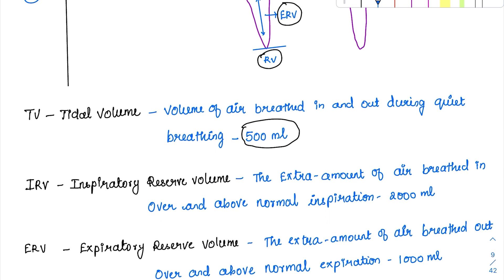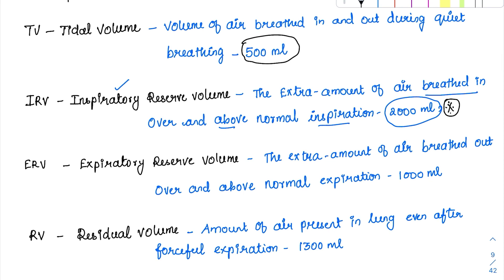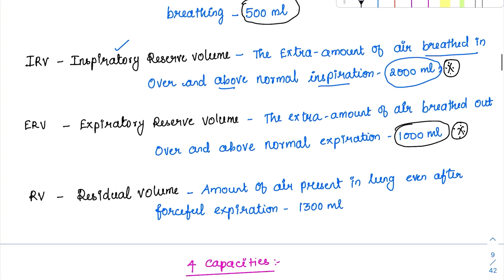Inspiratory reserve volume is the extra amount of air that can be breathed in above the normal inspiration; its normal value is 2000 ml. These values are taken from the recent edition of Ganong. Expiratory reserve volume is the amount of air that can be breathed out above the normal expiration, which is 1000 ml. And residual volume — the amount of air present inside the lung even after forceful expiration — is 1300 ml. This is a volume which cannot be measured by a spirometer, so that is one MCQ point.